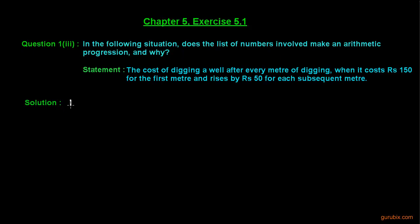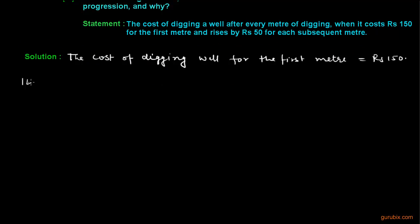So the cost of digging well for the first meter equals Rs 150. The cost of digging well for the next meter will be Rs 150 plus 50, because it's Rs 150 for the first meter and Rs 50 for the next subsequent meter. So if we add Rs 150 to 50, we get Rs 200.